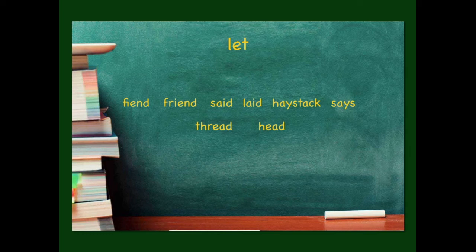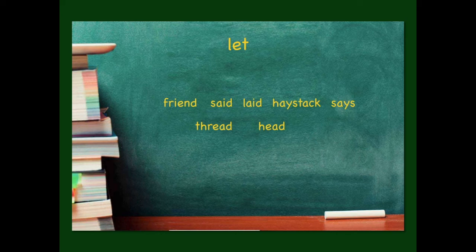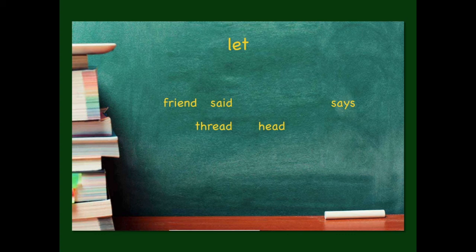All right, so let's look at let. First word is fiend — no, that gives us the long E sound, so that goes. Next, friend — let, friend — yeah, that'll stay. Next, said — let, said — that'll stay. Next, laid — let, laid — no, laid will go. Next, haystack — no, just a long A, so that'll go. Next, says — yeah, let, says — good. Then thread — let, thread — yes. And then head — let, head — yeah. So all five of those words check out.